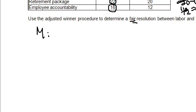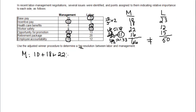they still get the incentive pay. They still get the opportunity for promotion. And then again, they're getting a part of the retirement package. So 22 points, but we're getting just a portion of that. And then the employee accountability. On the labor side, they still get everything that they asked for because they didn't have any of that retirement package. So we already know that's 50.